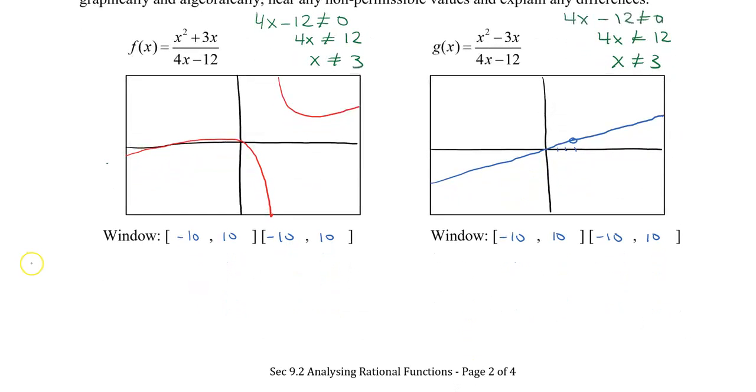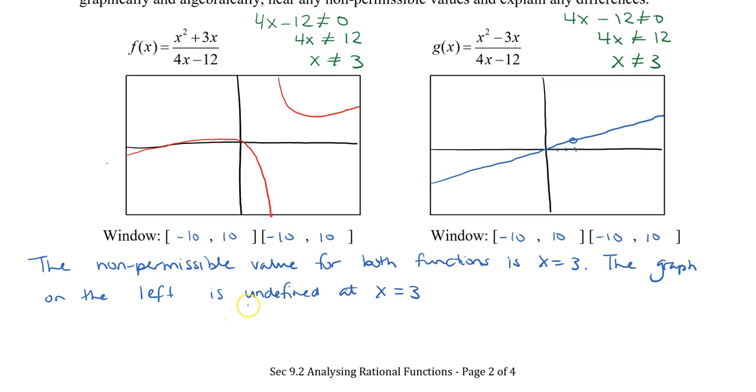So just a little comment here. The non-permissible value for both functions is x equal to 3. The graph on the left, which is the f(x), is undefined at x equal to 3. Whereas the graph on the right does not exist at x equals 3.